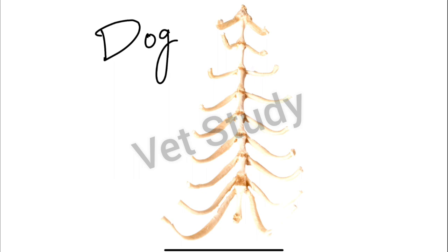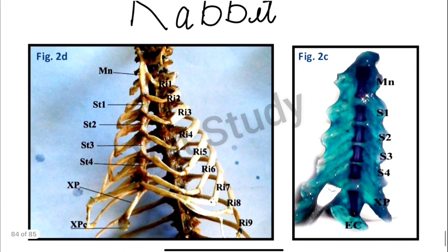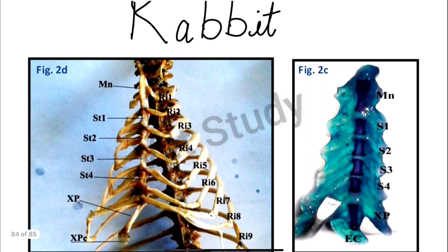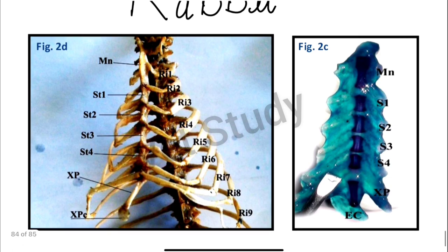Now let's talk about the rabbit. The rabbit sternum has seven sternibrae. The first segment is long and also articulates with the clavicle on either side. The last segment is long, and the xiphoid cartilage is in the form of an expanded plate, as you can see here.